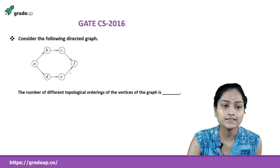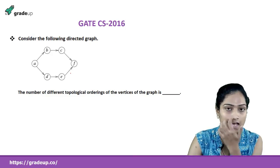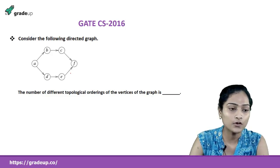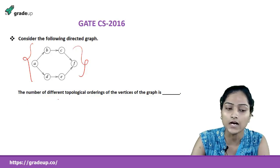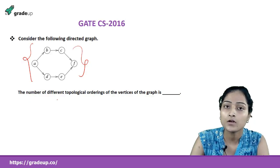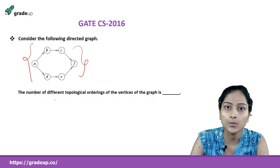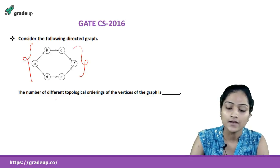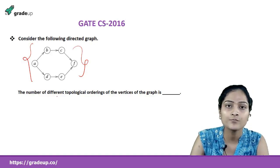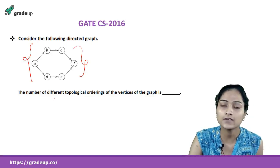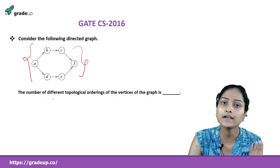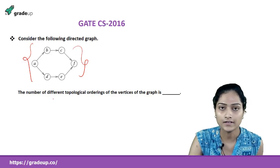This question was asked in GATE CS 2016 for two marks. We are given a directed graph and asked to find the number of different topological orderings of the vertices. Recall the algorithm: first, visit the vertex with indegree 0; second, delete that vertex from the graph; third, repeat this procedure for each vertex.